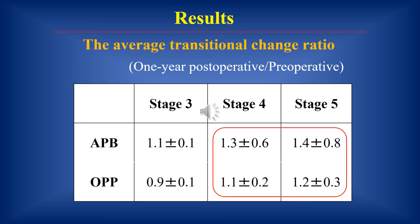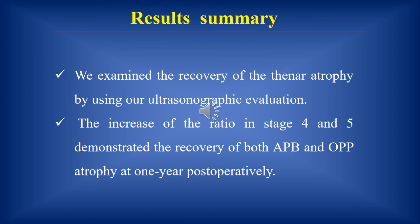The increase of the ratio in stages 4 and 5 demonstrated the recovery of APB and OPP atrophy. Thenar atrophy is shown in advanced CTS. The increase of the ratio in stages 4 and 5 demonstrated the recovery of both APB and OPP atrophy.